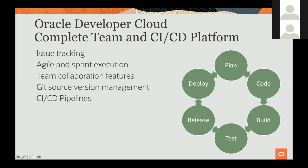The operating and monitoring aspects are things you can do from the Oracle Cloud monitoring dashboards. Inside Developer Cloud Service, we created a single platform that integrates aspects from issue tracking, managing your agile development process and sprints, features that allow your team to collaborate, a Git-based source version management system, and a CI/CD pipeline that allows you to automate the build, test, and deploy cycles of your application.